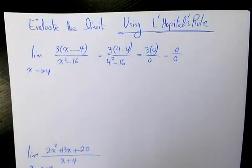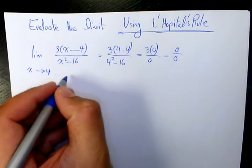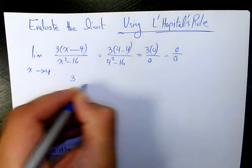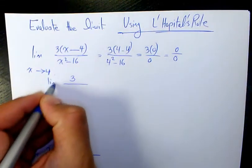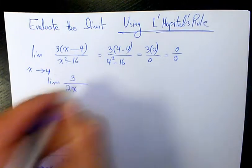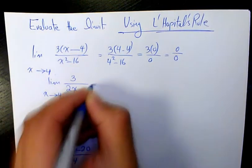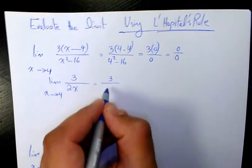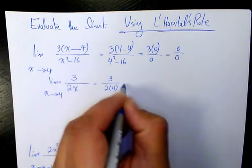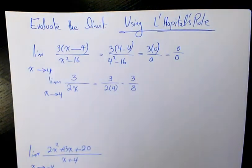This means that you need to use L'Hospital's rule. The derivative of 3 times x minus 4 is going to be just 3, and the derivative of x squared minus 16 is going to be 2x when x is approaching 4. So it's going to be 3 over 2 times 4, which is 3 over 8. That's going to be the final answer.